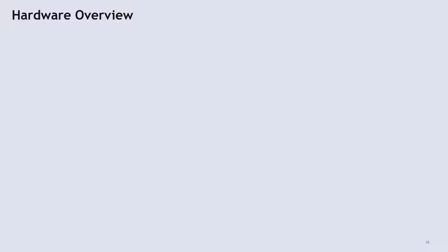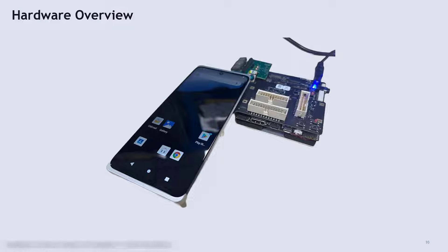All the solutions in the current AI toolkit are to be run on Snapdragon HDK8550, which is the Hardware Development Kit 8550. This kit primarily contains three parts. One is the main board, which is the brains of the board. Then there is a sensor card, which should be attached to the main board. The sensor card supports attachment of a display and camera sensors. And there is also a display card to get a similar feel of a mobile phone.